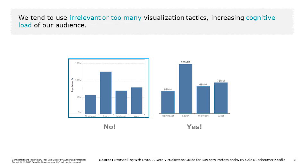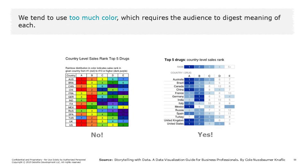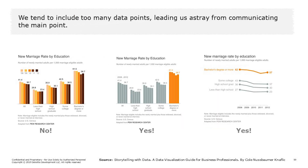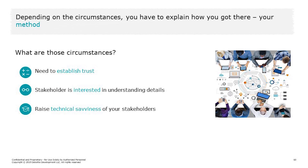Yet we don't do that. We include too many visualization tactics such as colors, size, and font variations, all of which increase cognitive load and distract from the main point. We tend to overuse lines and overuse color — irrelevant to the message and distracting. We also expect the audience to extract insights on their own, not spending enough time on visually communicating our main point. We can narrow our audience's attention by using contrast strategically and by simply picking the right visual.